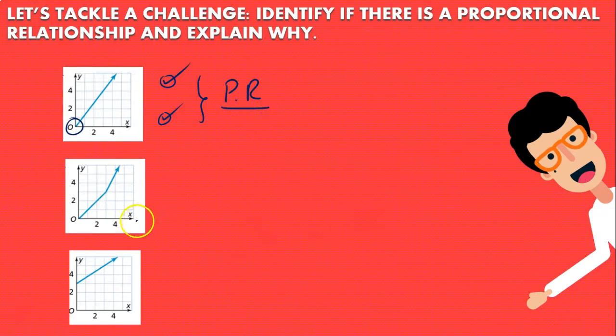The second graph passes through the origin and the first half of it is a straight line. However because it changes direction, you can see that the slope changes here, meaning that it's not a completely straight line. So this is not a graph showing a proportional relationship.